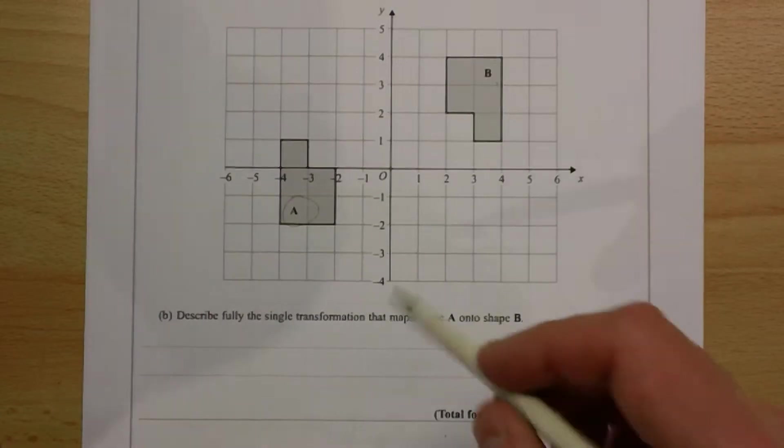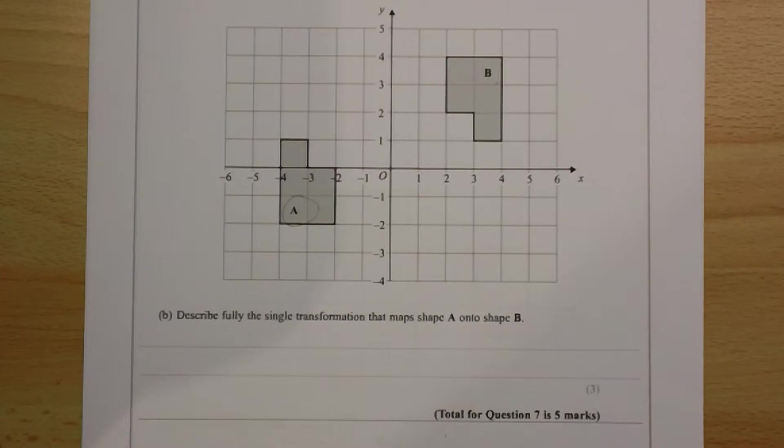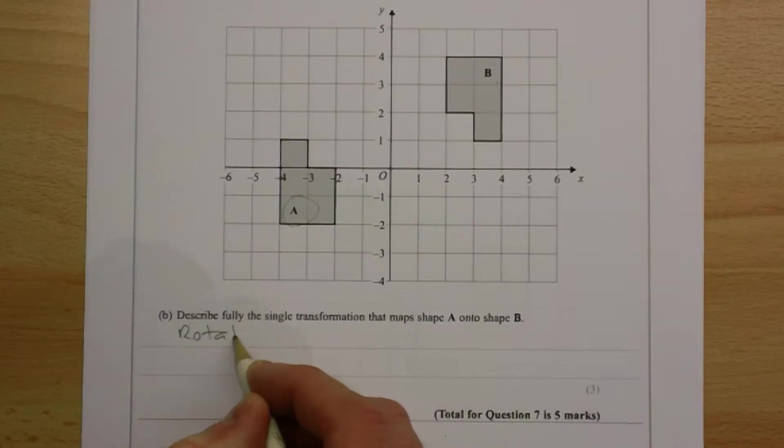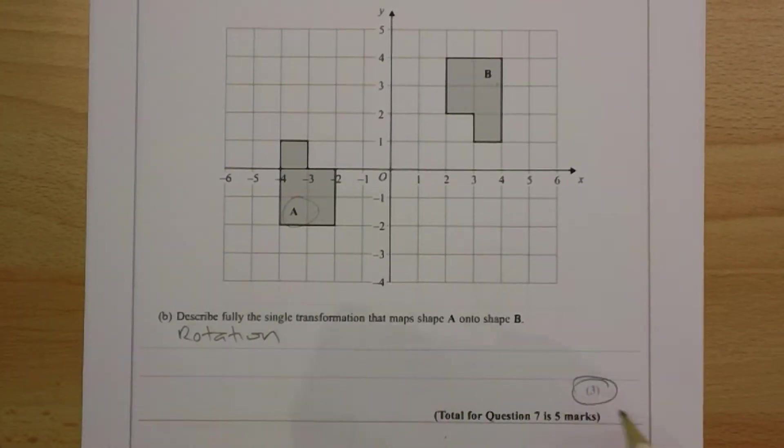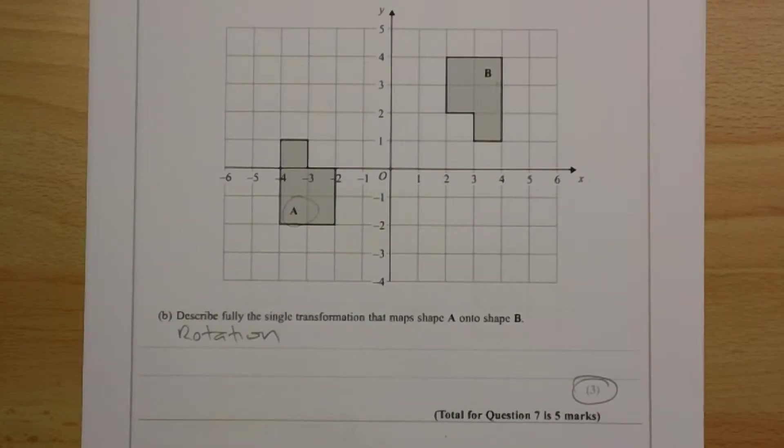It's changed its orientation. So unlike the last one, it's not a translation. What's actually happened with this shape is it's been turned around. So therefore, we have a rotation. But notice there are three marks available for this part of the question, so you're going to have to provide more information.